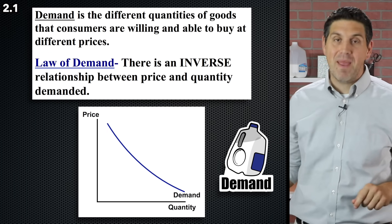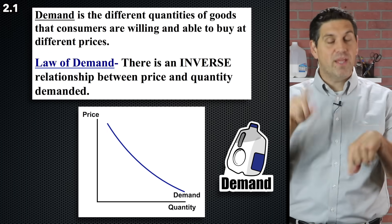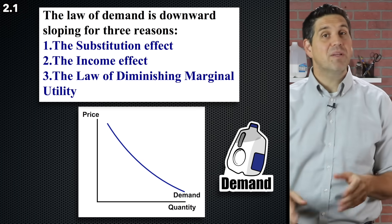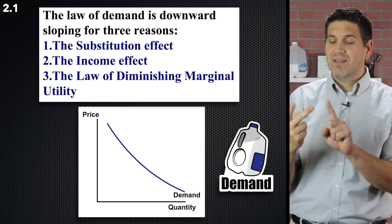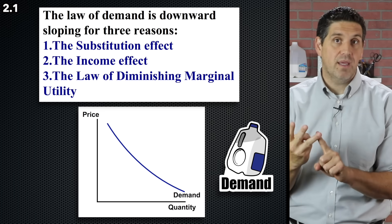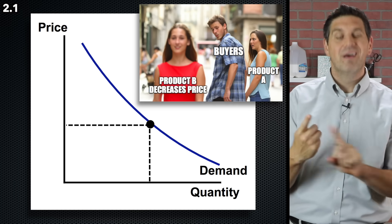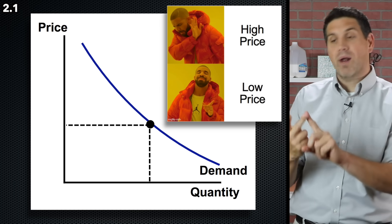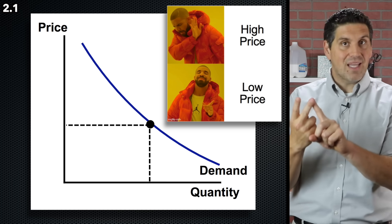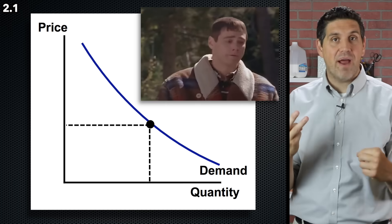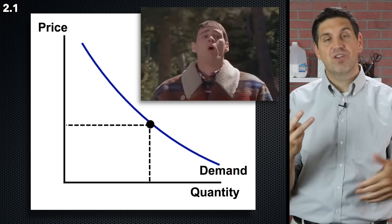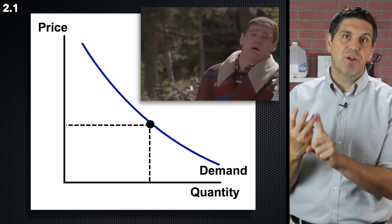By this point, you should feel extremely comfortable with demand — downward sloping, showing an inverse relationship between price and quantity. That happens for three reasons: the substitution effect, the income effect, and the law of diminishing marginal utility. If the price falls, people buy more because they move away from substitutes. If the price goes down, people buy more because they can afford more — that's the income effect. And to get people to buy more, you've got to lower the price because they get less additional satisfaction from each additional unit — law of diminishing marginal utility.